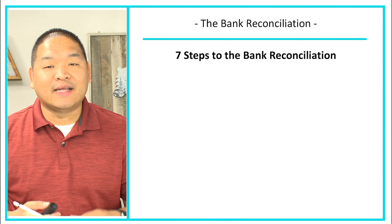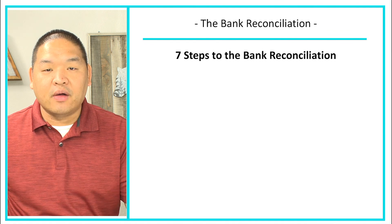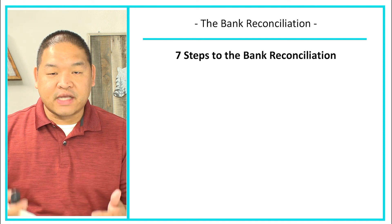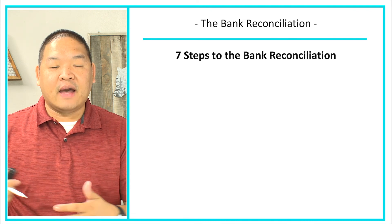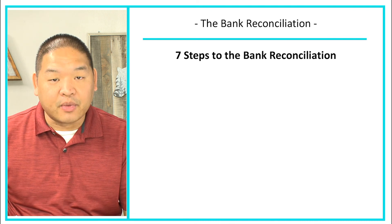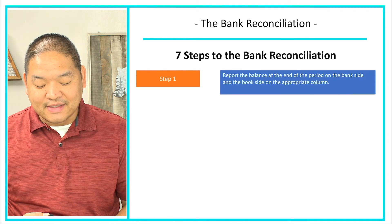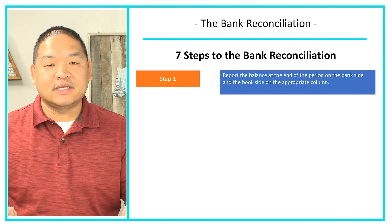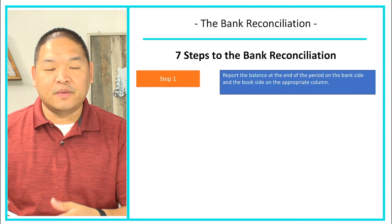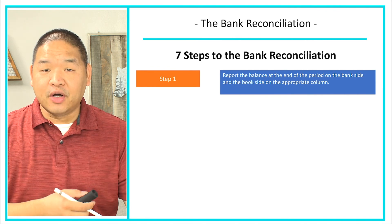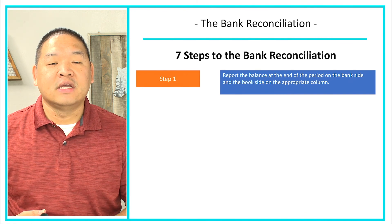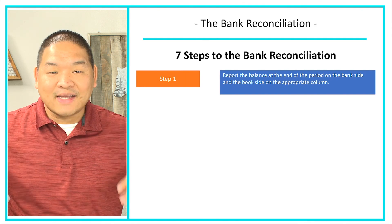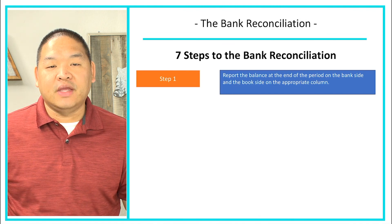In order to do a bank reconciliation, we've got seven steps. We're going to describe all seven steps here in this lesson, and in the next lesson we're actually going to do a problem in which we'll go over those seven steps individually. Step number one: we're going to report the balance at the end of the period on the bank side and the book side in the appropriate column. We're going to get the ending balance from the bank statement and the ending balance from our books. Typically, when we look at both of those ending balances, they are not going to be the same, so we'll have to adjust or reconcile them so that at the end of the bank reconciliation process, they are both equal to each other.